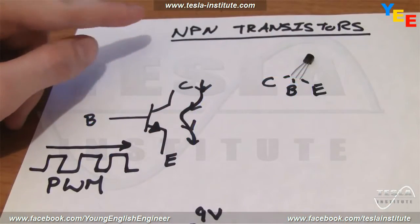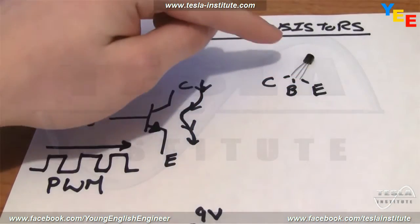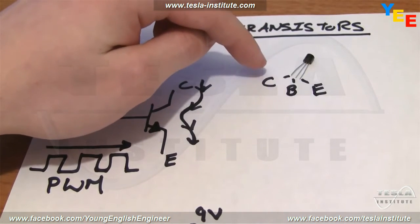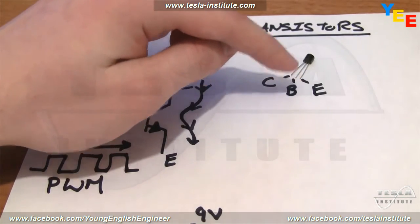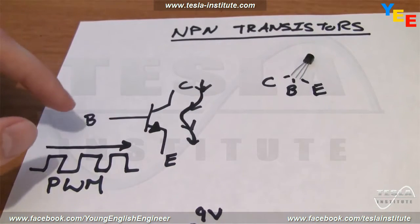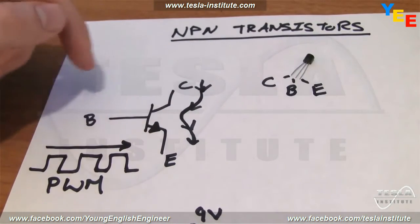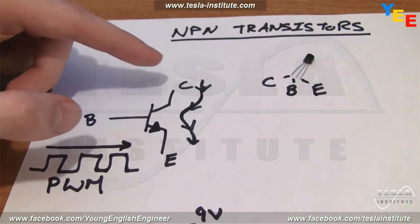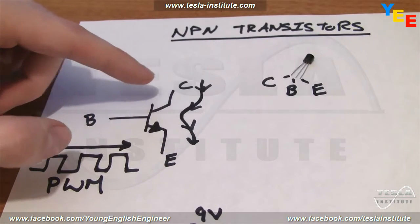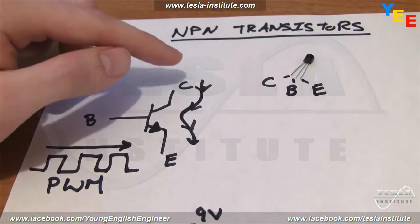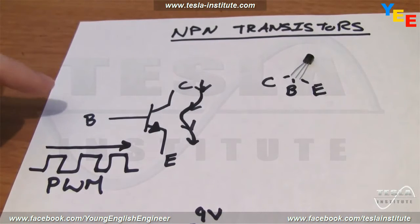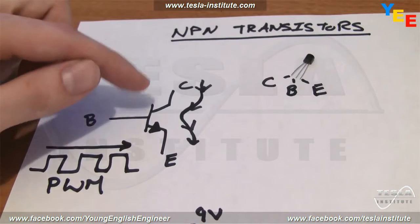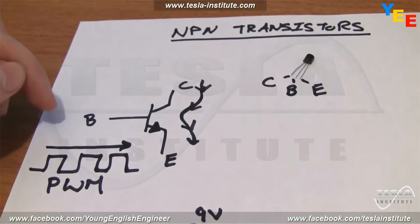Today we're going to be using an NPN transistor — you can see an example of one here. NPN transistors have three pins: a collector, a base, and an emitter. You can see in the schematic it also has those three pins. Current flows in through the collector and out through the emitter, but it's only allowed to flow through based on the state of the base pin. More current is allowed to flow from collector to emitter as the voltage of the base pin increases.